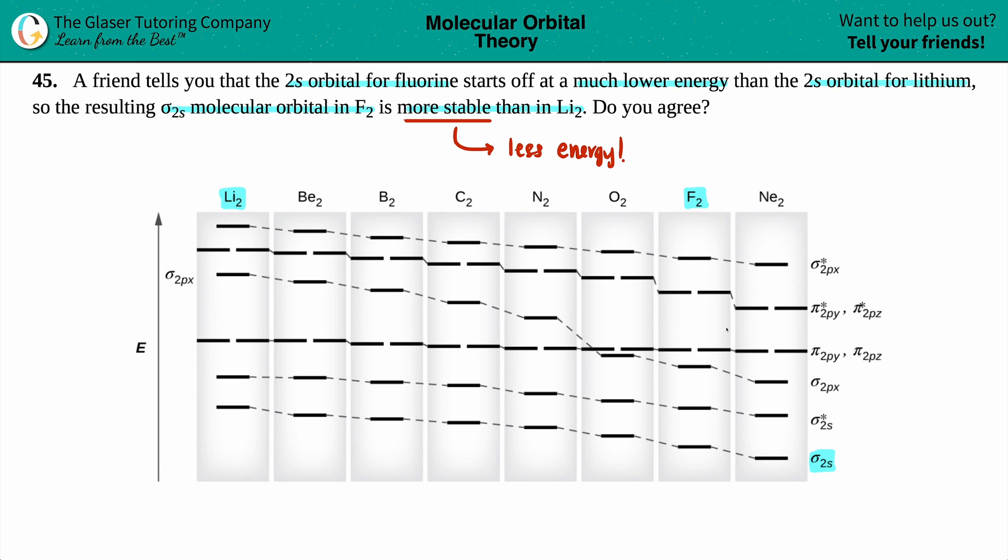That's the one all the way down here. Here's the sigma 2s, and for F2, it looks like the F2 is over here. And for the Li2, it's a little bit higher. So let's just pull this over. The energy would be roughly around here.